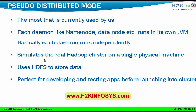What happens exactly here is each daemon like name node, data node, etc. runs in its own JVM — basically each daemon runs independently. JVM stands for Java Virtual Machine. Every process will run under its own Java Virtual Machine, so all processes are not interrelated — everything is independent. For example, if one process goes down, there is no rule that another process also needs to go down.